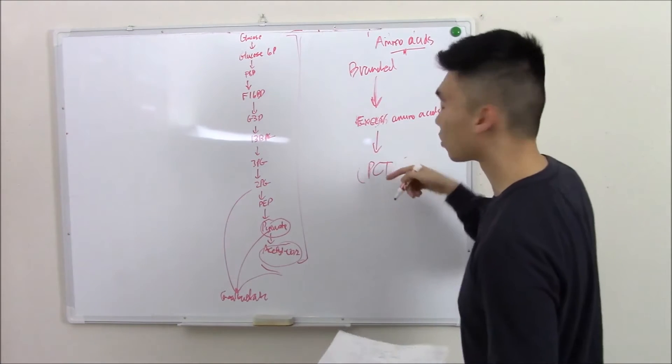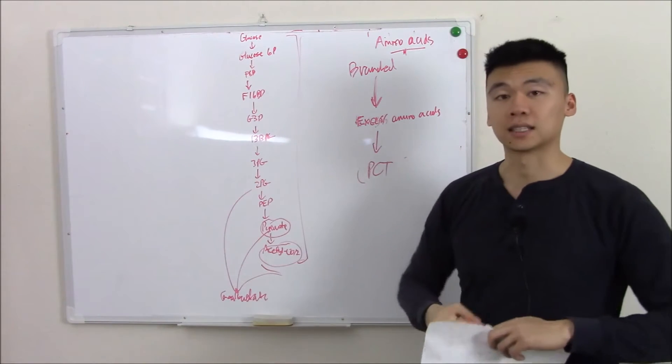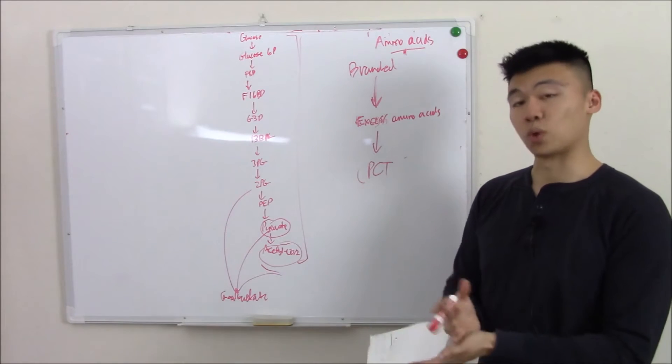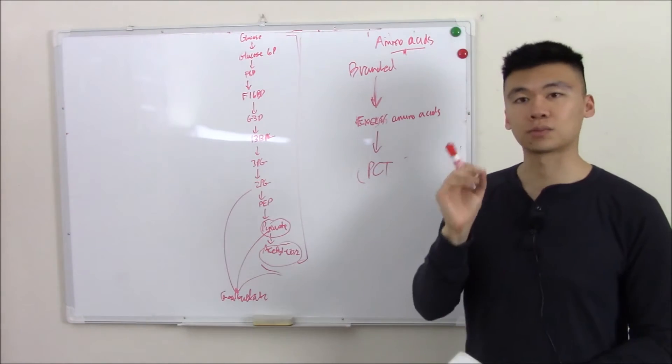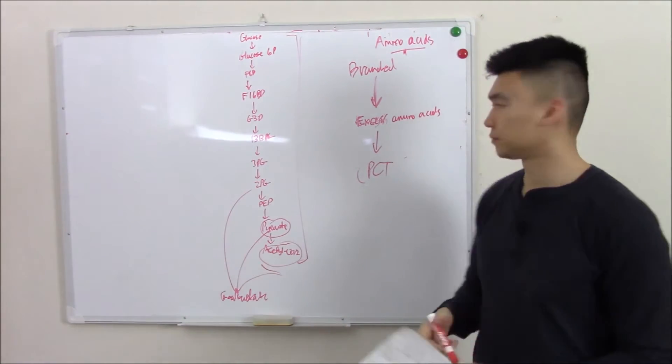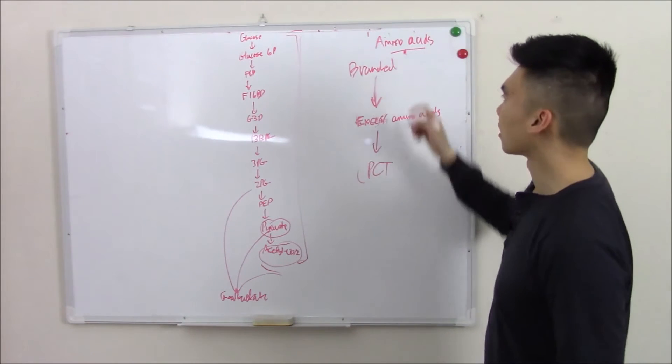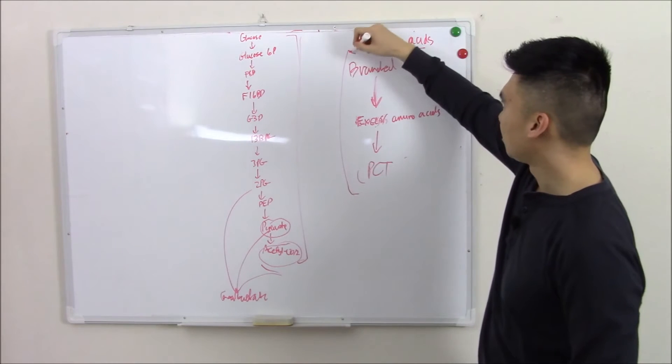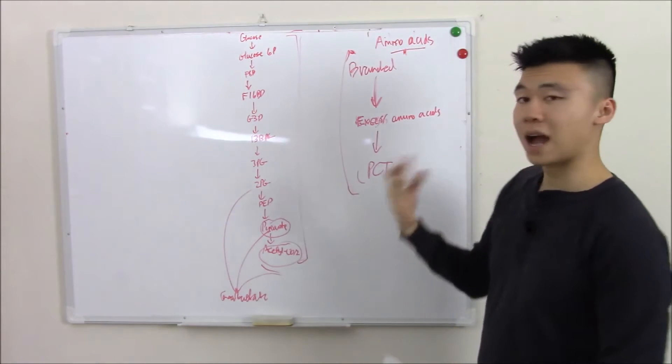PCT. So that reabsorbs excess amino acids. Now amino acid reabsorption isn't random. You have specific transporters for specific amino acids. And that's what we're going to talk about today. This whole pathway and how it can go wrong.